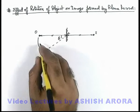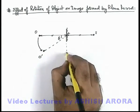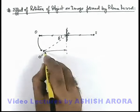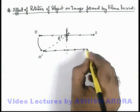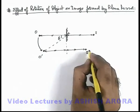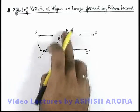Then we can see if object is shifted to a position O prime, then the new position of image will again be at the same distance behind the mirror. That'll be say I prime, which is the corresponding image for this object in the same plane mirror.